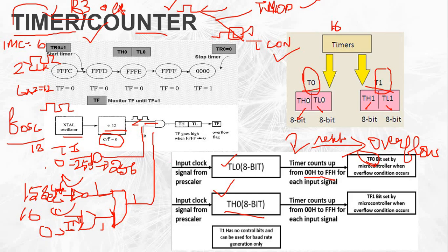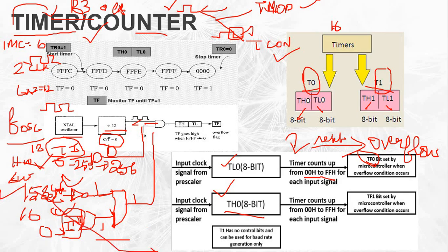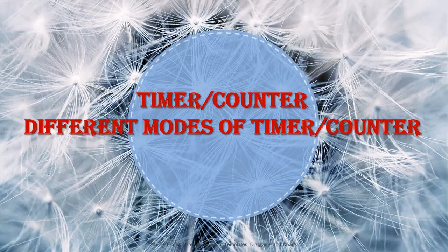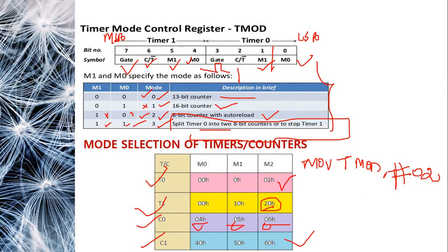The gate signal provides both hardware control and software control. If hardware control is used, the interrupt signal must be 1 and the TI flag is 1. If software control is used, the TI flag controls the operation. That is the use of the gate signal in controlling the timer.